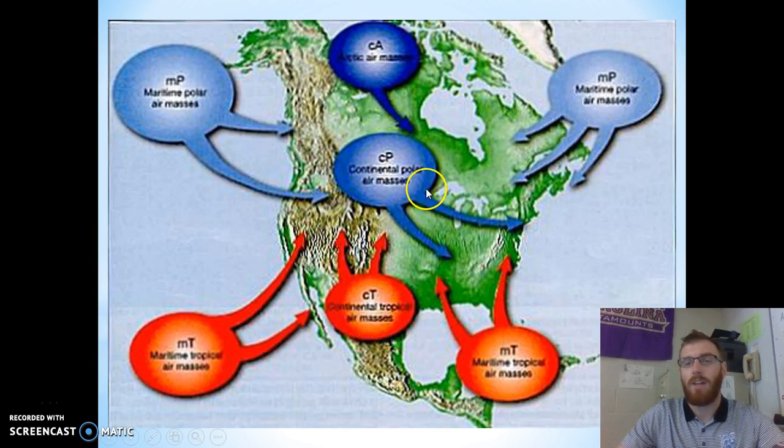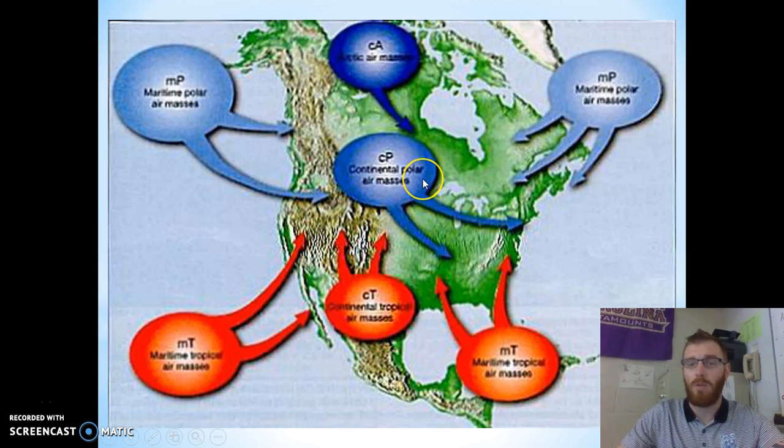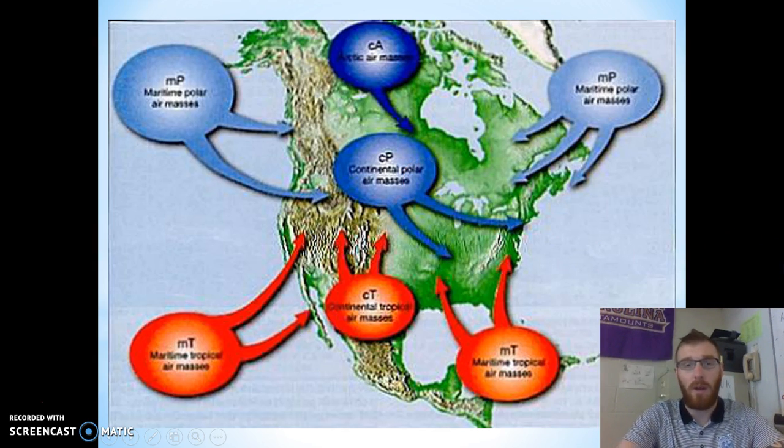I can see that this one forms over land, so I know it's automatically going to be continental. It's coming from the poles, so it's going to be polar. It's probably going to be cold because near the poles it is rather cold. Keeping those things in mind will help you remember these air masses.